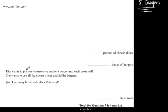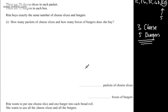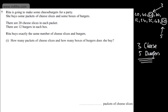Rita wants to put 1 cheese slice and 1 burger into each bread roll. She wants to use all of the cheese slices and all of the burgers. Part 2 asks how many bread rolls does Rita need? The burgers are sold in packs of 12 and the cheese in packs of 20. So 5 times 12 is 60 and 3 times 20 is also equal to 60.